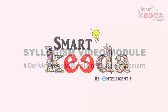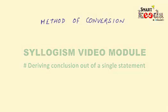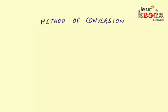Hello friends, in this video we are going to learn the method to derive a conclusion out of a single statement. To understand the method in detail, let's have an algebraic equation: a is equal to b. If I ask you to derive a definite conclusion out of the given equation, the answer is b is equal to a — we simply interchange the classes a and b and convert the statement into a new one.